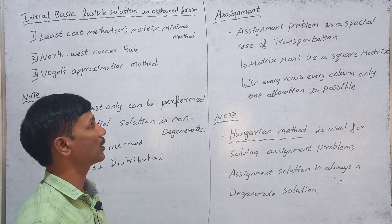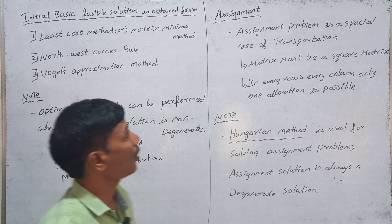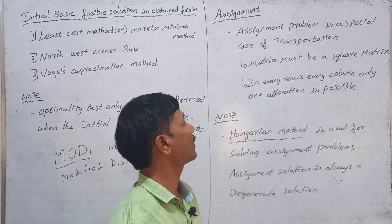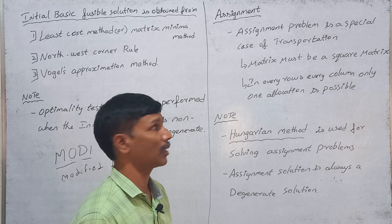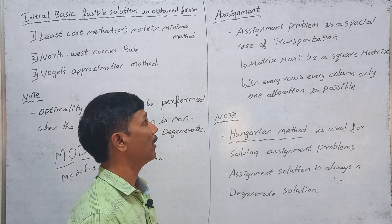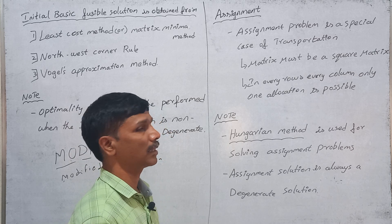The optimality test is performed using the MODI method — the Modified Distribution Method. It is a modified form of the simplex method applied to the transportation problem. In the special case where the transportation matrix is a square matrix with only one allocation possible in each row and each column, it becomes an assignment problem.